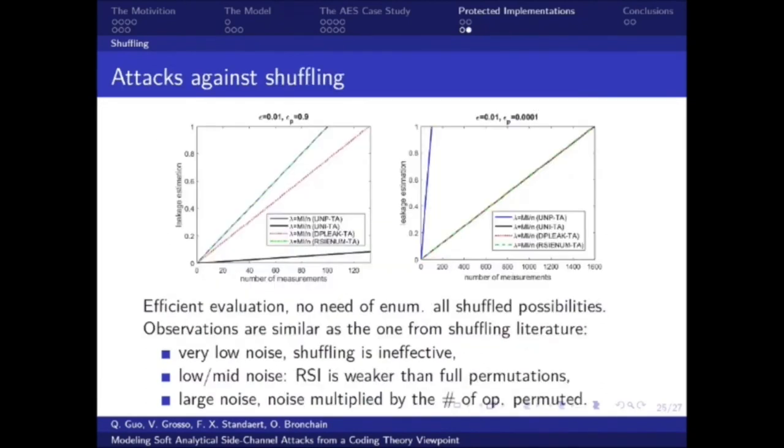Using local random probing, we can evaluate leakage bounds for different scenarios. This estimation can be computed efficiently, compared to evaluation based on an attack that requires intensive computation. We draw the bound on the graph. On the x-axis, we have the number of measurements, and on the y-axis, we have our leakage bounds. We have several graphs, so the blue line corresponds to the unprotected case that is given for our reference. And then in green, we have the random start index attack, then in red, the dpDPA template attack, the one using information on the permutation generation, and in black, we have the attack without using the permutation. On the left part, we have low noise scenario, on the right part, we have high noise scenario, and in the paper, we also get some intermediate noise levels. We have some observations we can make from this graph, and that are similar to the one from the shuffling literature.